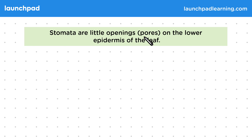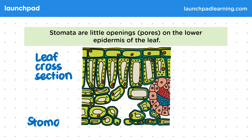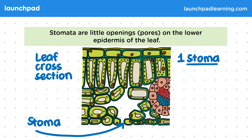Stomata are little openings or pores on the lower epidermis of the leaf. This diagram shows a leaf cross-section. At the bottom of the leaf you can see a gap which is called a stoma. Bear in mind that we use the word stoma when it's just one — this is the singular. When there's more than one stoma,